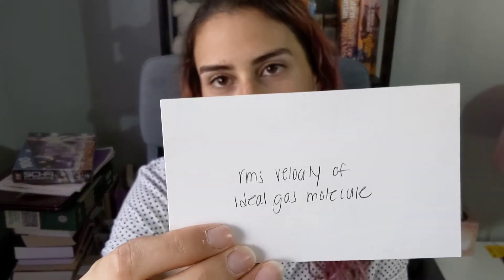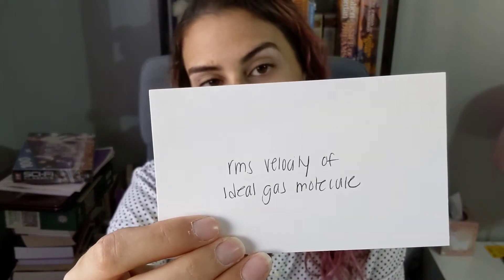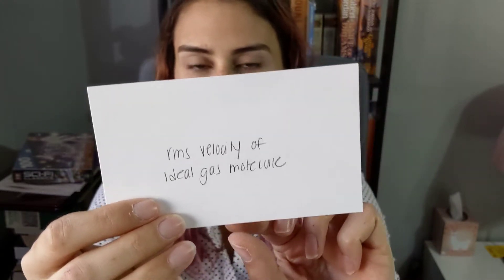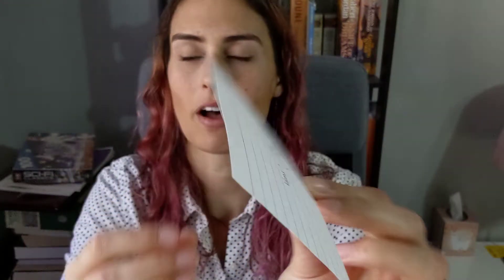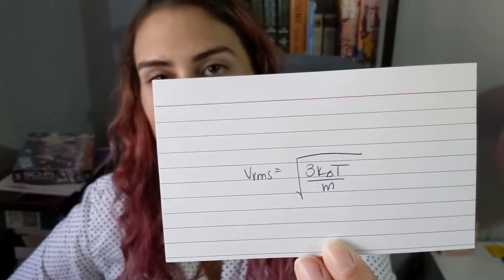The RMS velocity of an ideal gas molecule equals the square root of 3 k_B T over m.